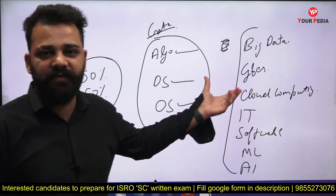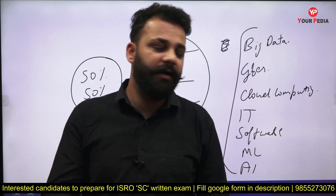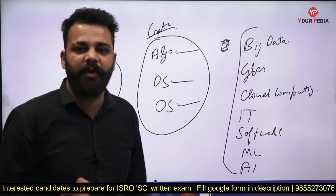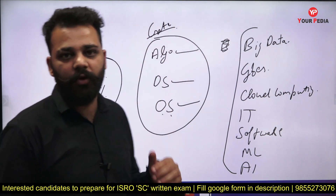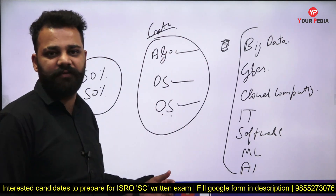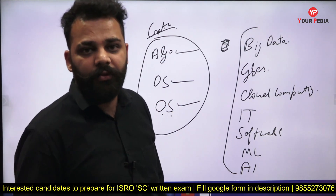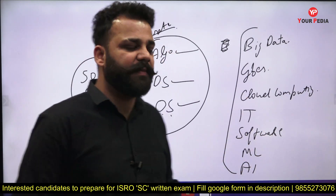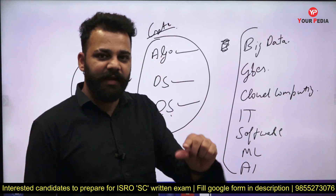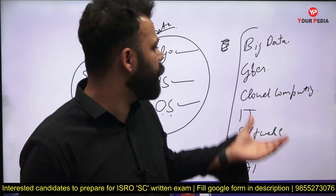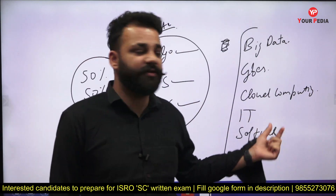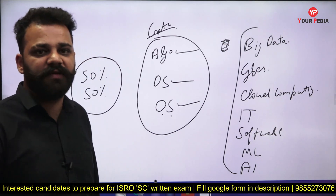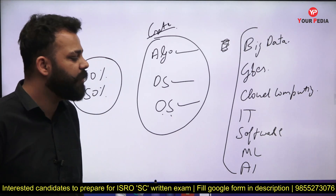You cannot leave these topics or be selective in your ISRO preparation because of the randomness of the exam. You cannot decide to prepare only Algorithms and skip Operating Systems, because sometimes they ask 3 questions from one and 8 from another, and next time it reverses. You have to prepare all subjects. There are 7 to 8 allied subjects, and even 2 to 3 questions from each can add up to 15 to 20 questions, so you cannot leave them.